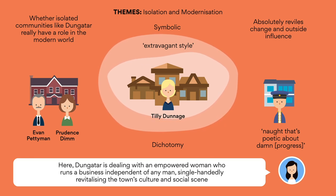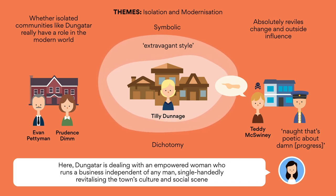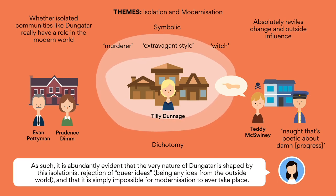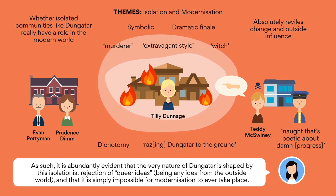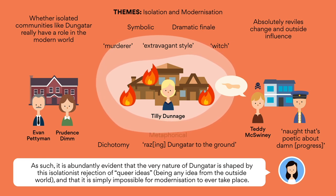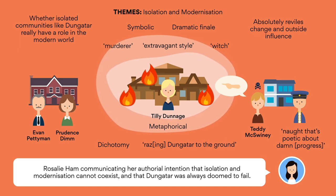Here, we can really start to see why Ham despises towns like Dungatar. Through this thematic lens, the death of Teddy McSweeney and Tilly's later ostracization shouldn't seem like a freak accident anymore. The townspeople were always looking for an excuse to label Tilly as a murderer and a witch, and when they got the chance, they absolutely latched on. It's abundantly evident that the very nature of Dungatar is shaped by this isolationist rejection of any idea from the outside world, and that it is simply impossible for modernization to ever take place. So when Tilly eventually brings about the dramatic finale — razing Dungatar to the ground — we shouldn't see this purely as an act of revenge. On a more metaphorical level, this is Rosalie Ham communicating her authorial message that isolation and modernization cannot coexist, and that Dungatar was always doomed to fail. All it took was one spark from Tilly for the town to burst into flames.